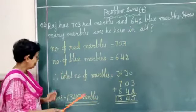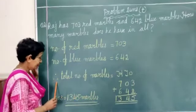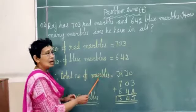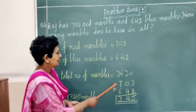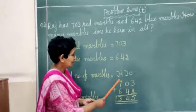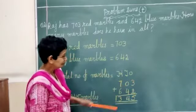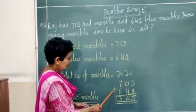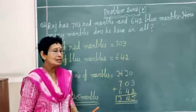Now again leave one line empty. This three dot you can see, the meaning is 'therefore'. Therefore, total number of marbles, that's what we have to find out. Then we will write H, T, O - hundreds, tens and ones. Then leave one line empty. Then we will write 703 plus 642. We have to add the numbers.